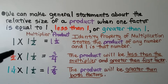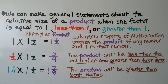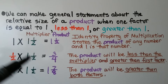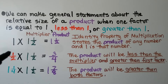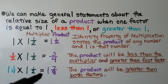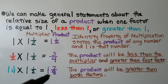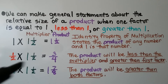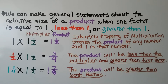For 1 half times 1 and 1 half, the product is 3 fourths — less than the multiplier 1 and 1 half, but greater than the first factor 1 half. For 1 and 1 fourth times 1 and 1 half, the product is 1 and 7 eighths, which is greater than both factors — greater than 1 and 1 fourth and greater than 1 and 1 half.